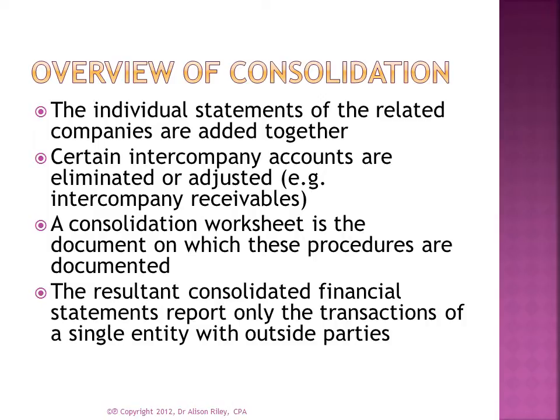In principle, the consolidation process is very straightforward. The separate financial statements, prepared from the separate books of the entities to be consolidated — the consolidated entity has no books of its own — are simply added together. Next, certain intercompany accounts are eliminated or adjusted. Accountants use a consolidated worksheet to take the account balances of the separate legal and accounting entities and methodically make eliminations and adjustments. The resultant consolidated financial statements report only the transactions of a single consolidated entity with outside parties.